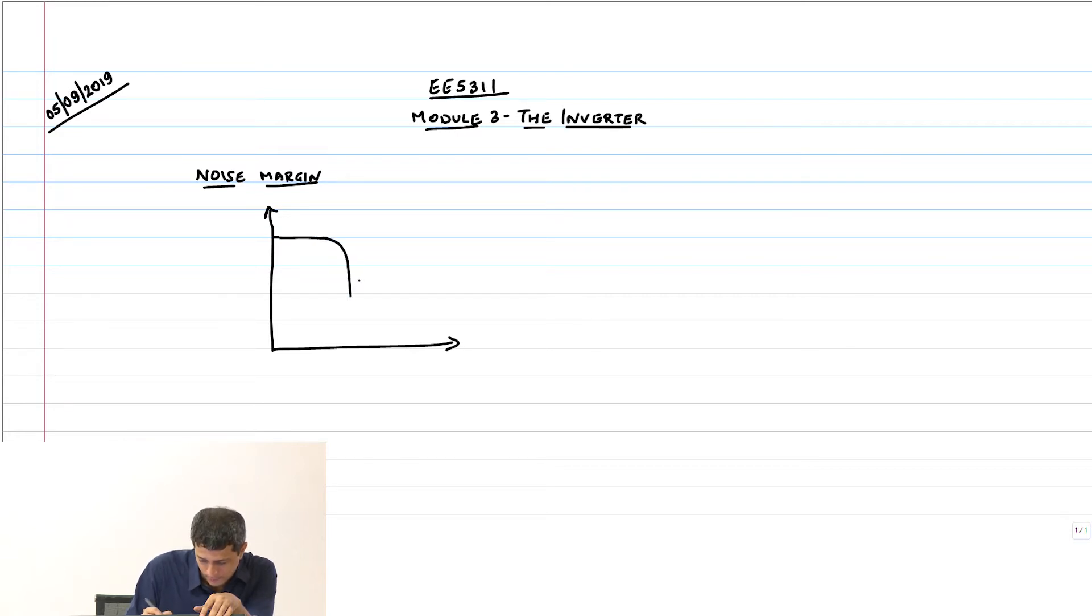We got accurate expressions. The key feature of a long channel inverter is at this point of V_out equal to V_in, and this is by the way V_out versus V_in, going all the way up to V_dd.